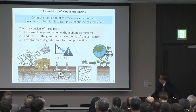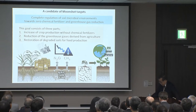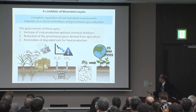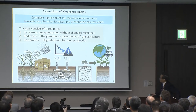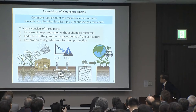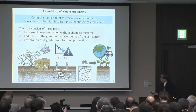This goal includes: first, the increase of crop production without chemical fertilizer; second, the reduction of greenhouse gas derived from agriculture; and third, the restoration of degraded soil for food production.